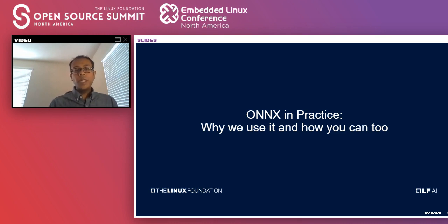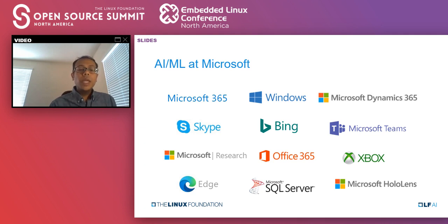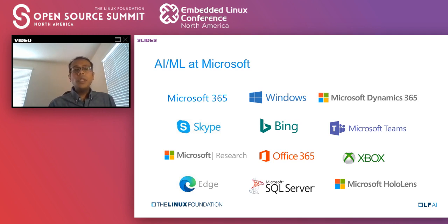Why do we use ONNX at Microsoft, and some tips on how you can use it as well. At Microsoft, AI and ML are used in all of our products. We have a diverse set of products that span the spectrum of solutions, all with different machine learning components. This means there are a large number of people developing AI and ML solutions using a variety of different tools. We talked to a lot of these teams and identified a number of common themes that were slowing people down as they developed ML solutions and tried to deploy them into production.